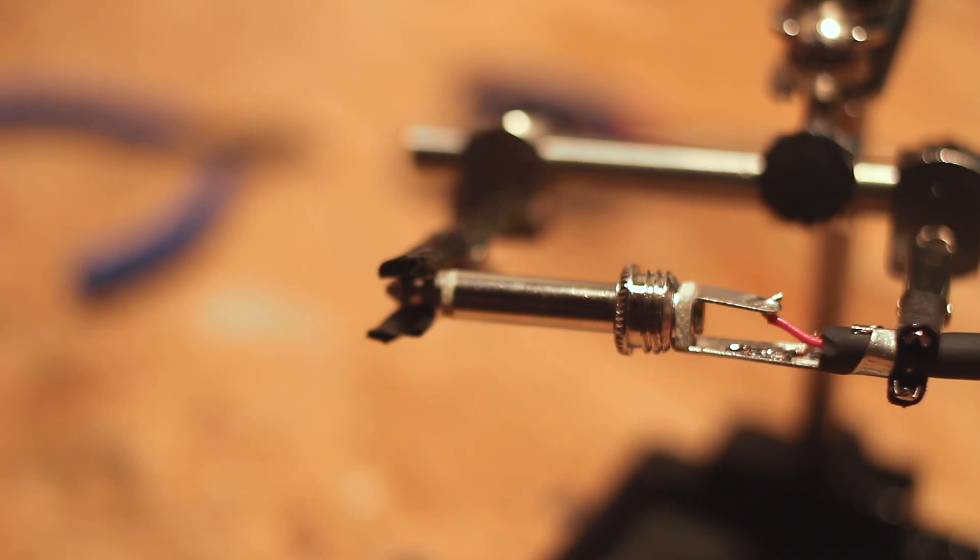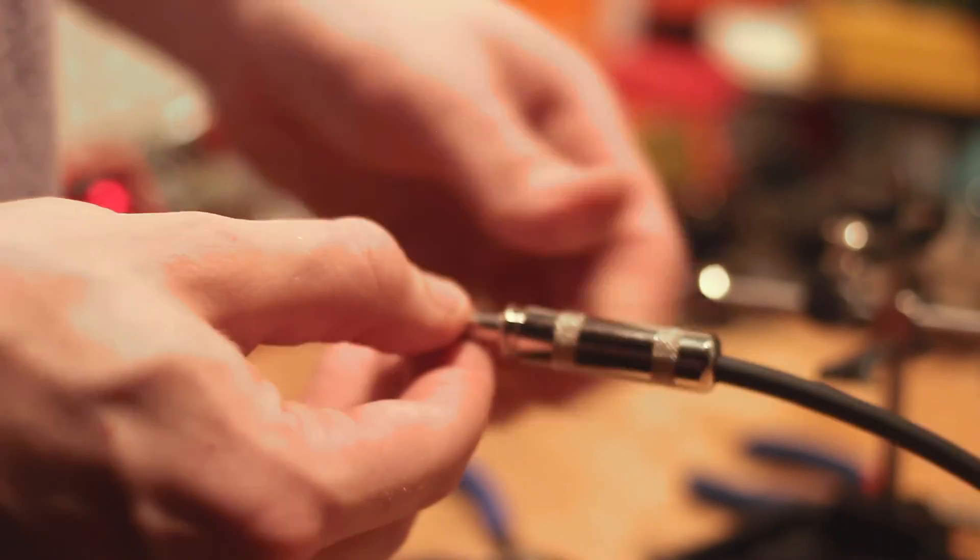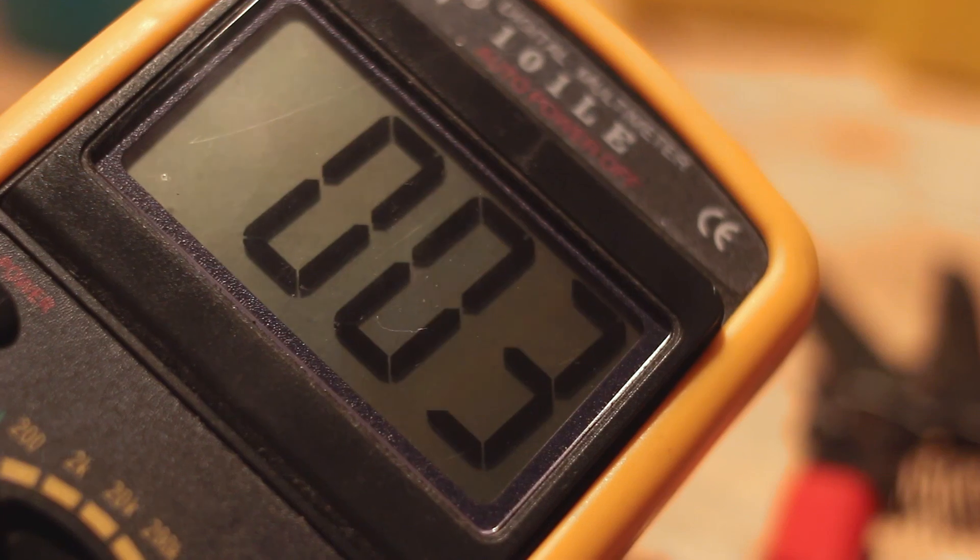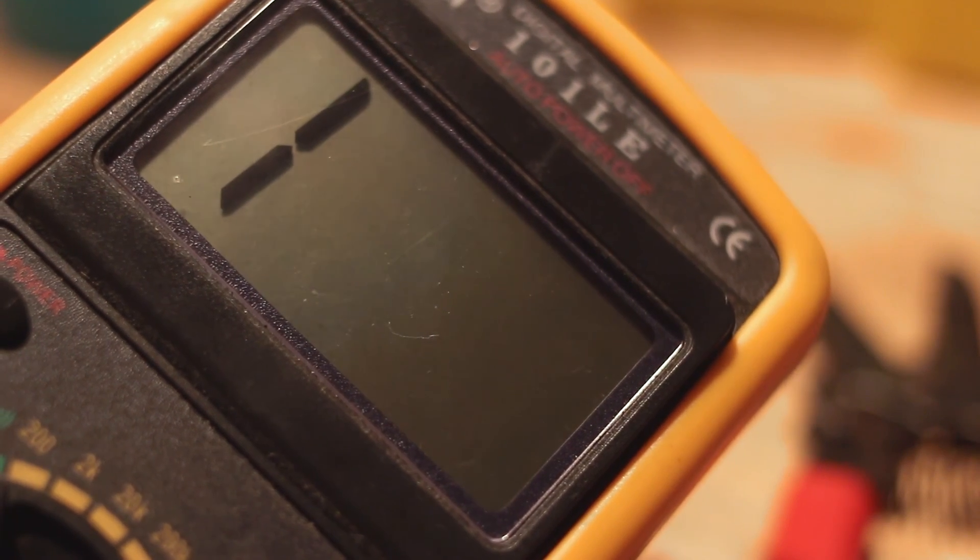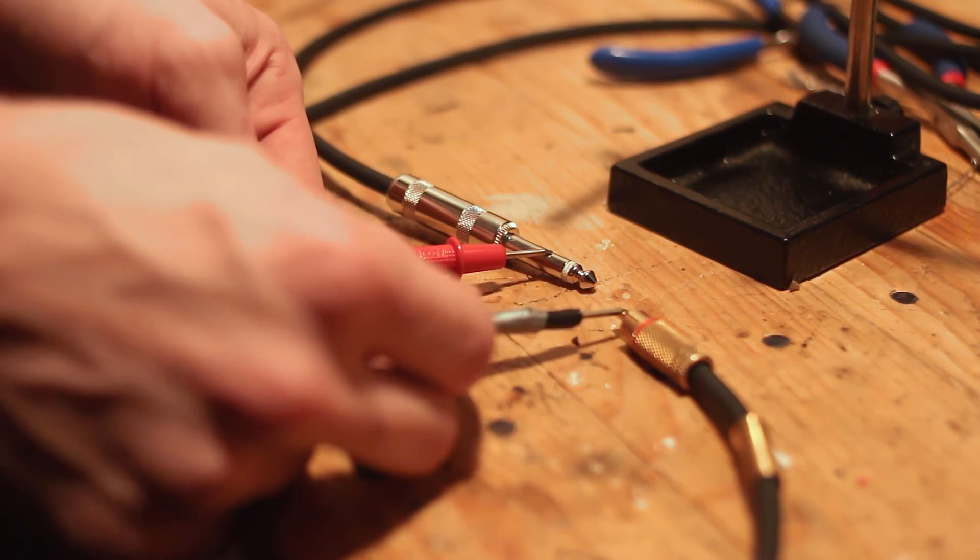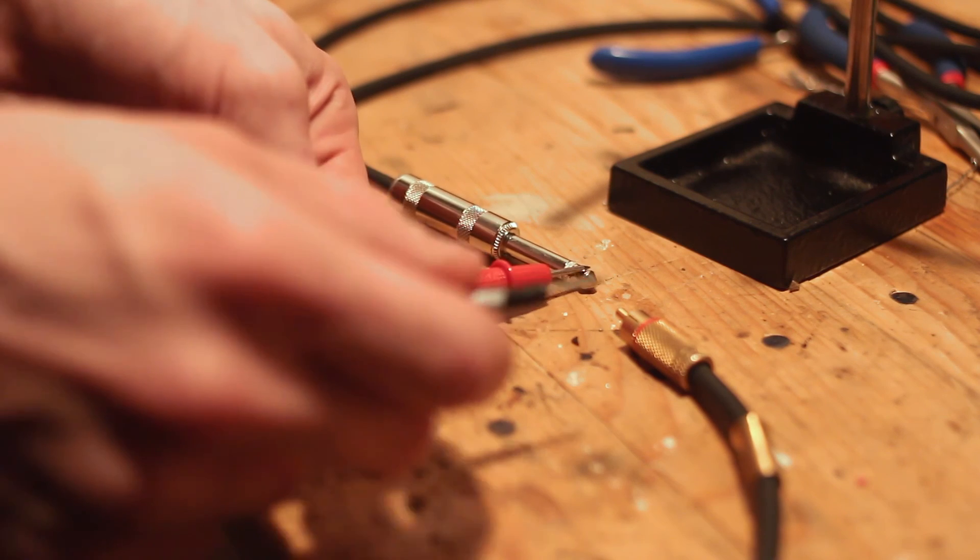After that, slide the housings onto the plugs and do a test with a digital multimeter. If your continuity matches, you have successfully made an RCA to quarter inch unbalanced cable. Congratulations.